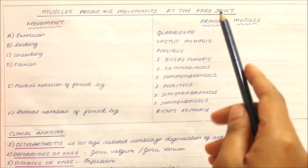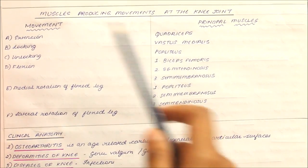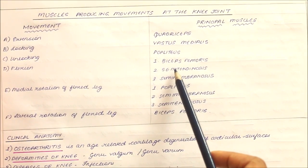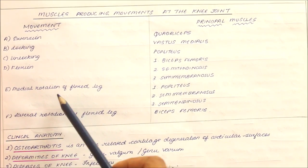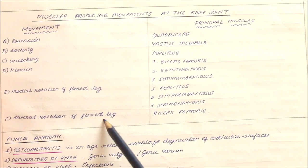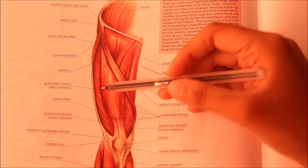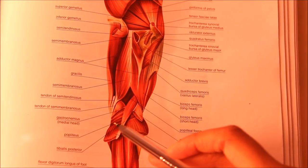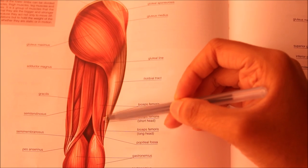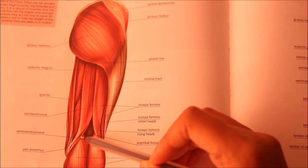Extension is produced by the quadriceps femoris. Locking is produced by the vastus medialis muscle. Unlocking is produced by the popliteus muscle. Flexion is brought about by the biceps femoris, semitendinosus, and semimembranosus. Medial rotation of the flexed leg is brought about by the popliteus, semimembranosus, and semitendinosus. Lateral rotation of the flexed leg is brought about by the biceps femoris muscle.